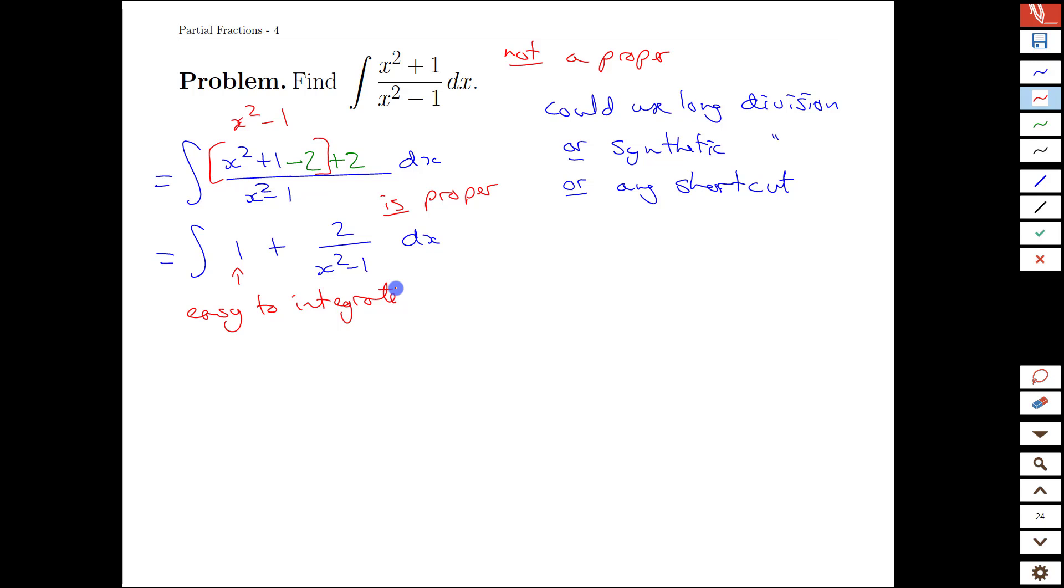Perfect. And this part here is a nice leading term that is easy to integrate. No fuss, no mess there. This is still a proper rational function, but it doesn't seem to help us integrate. How can we take another step? Well, we could try factoring. It's a perfect square, so we can factor it as x minus one, x plus one.